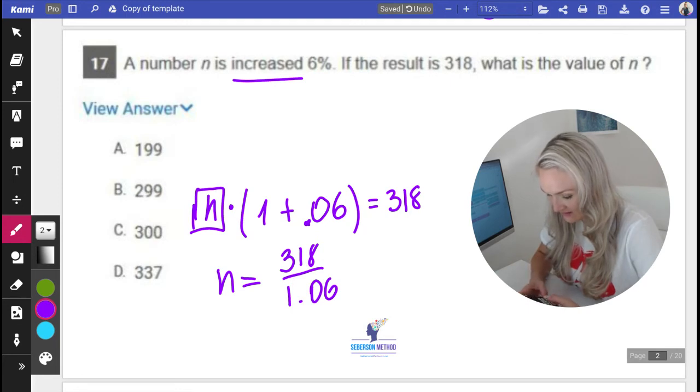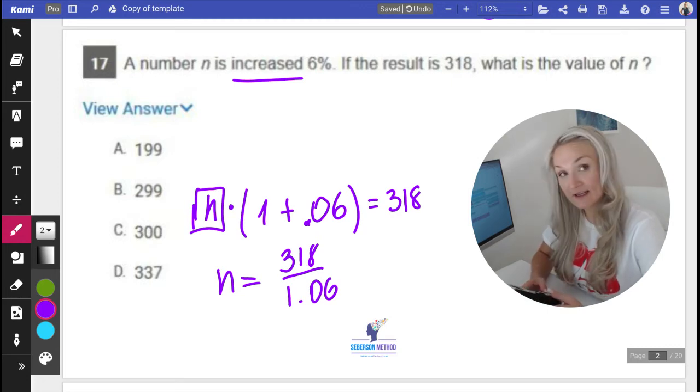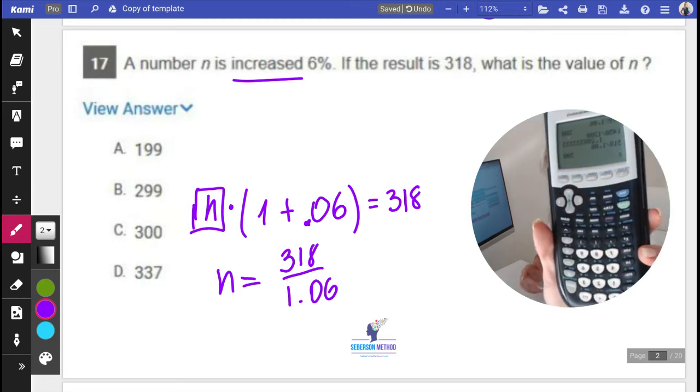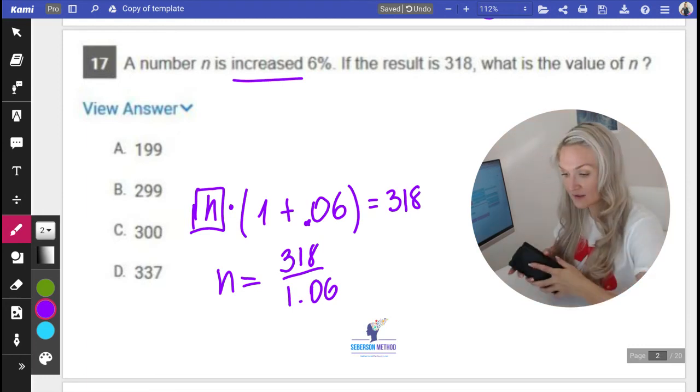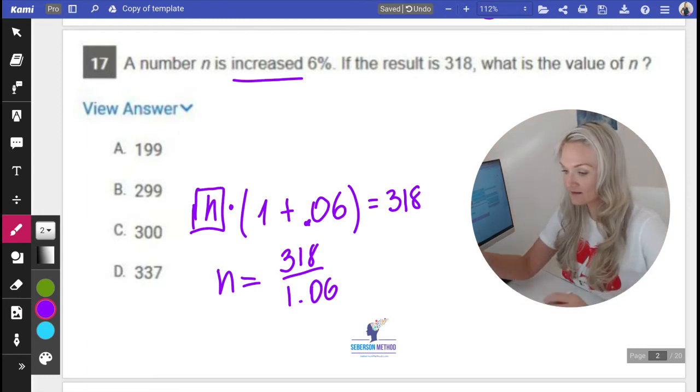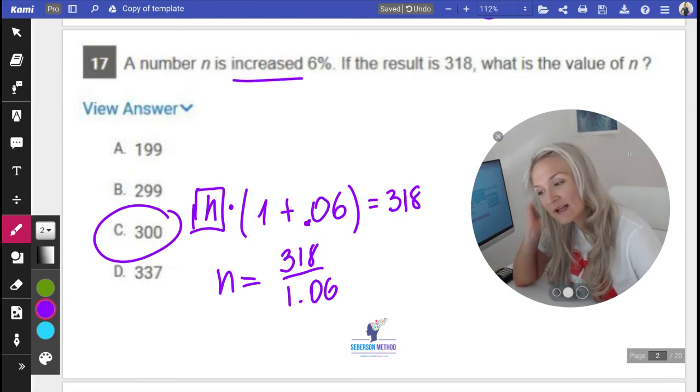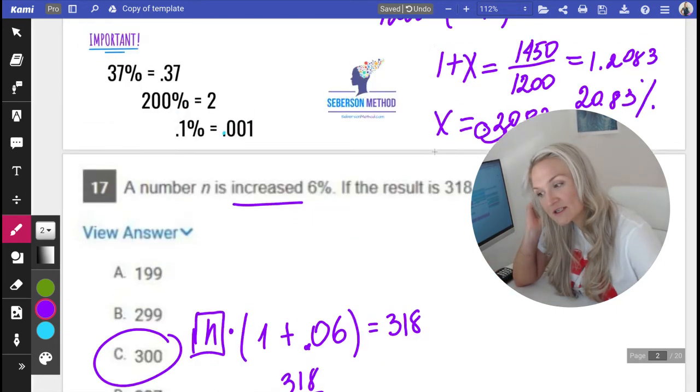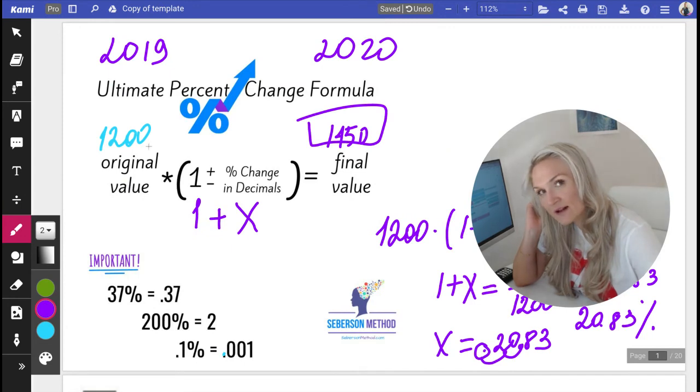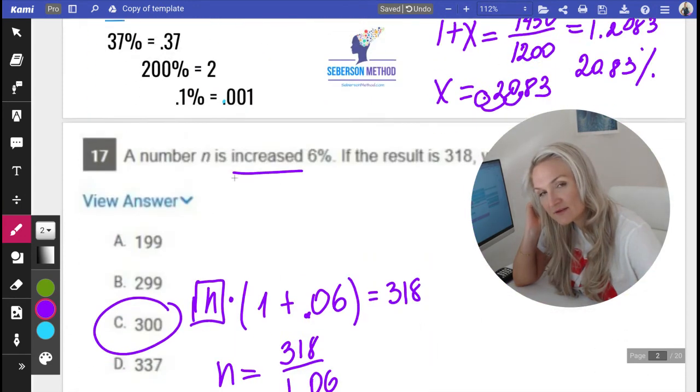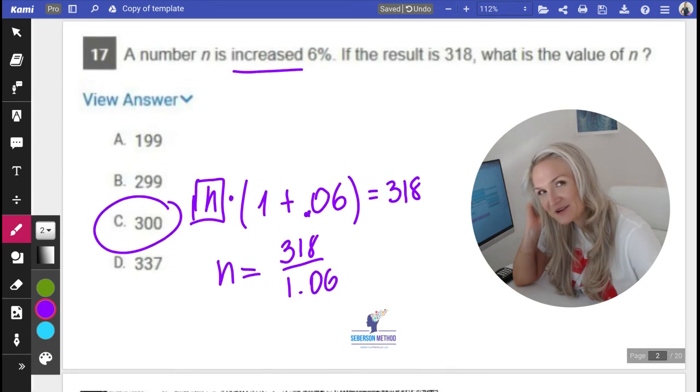And I get 300. So the answer is C—300 was my original amount. This is how powerful and helpful your percent change formula can be. Original value times 1 plus or minus the percent change gives you the final value. See you in the next video where we'll be solving a more difficult percent change problem on the SAT.